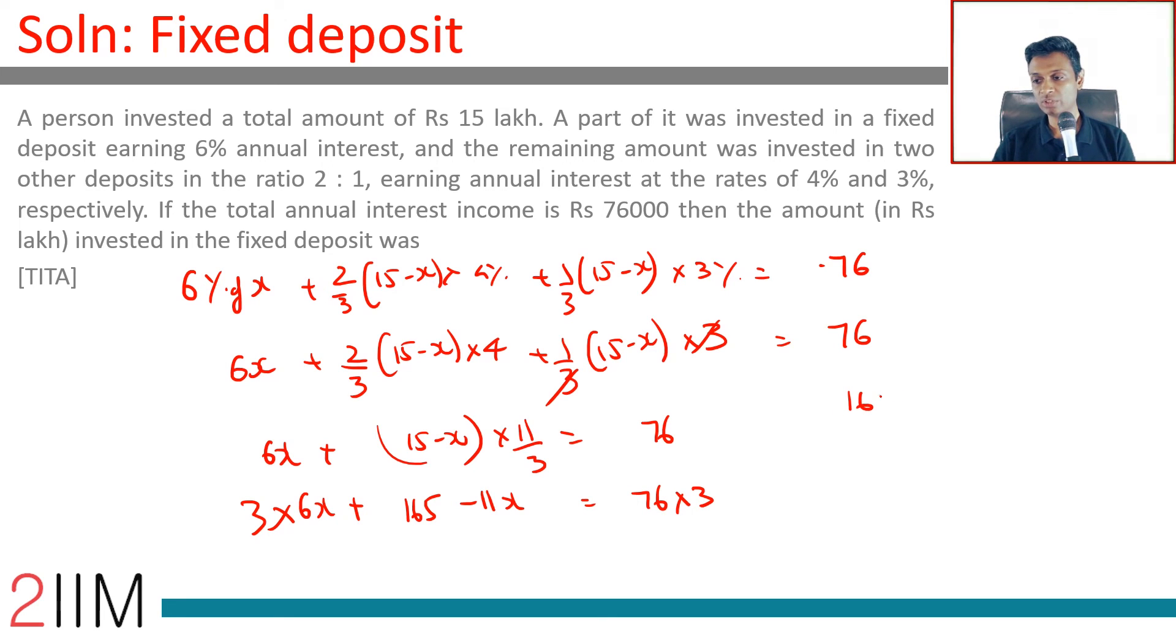So 165 plus 18X minus 11X equals 228. That gives us 7X equals 228 minus 165, which is 63. So 7X equals 63, meaning X is 9. So 9 lakhs are deposited in fixed deposit.